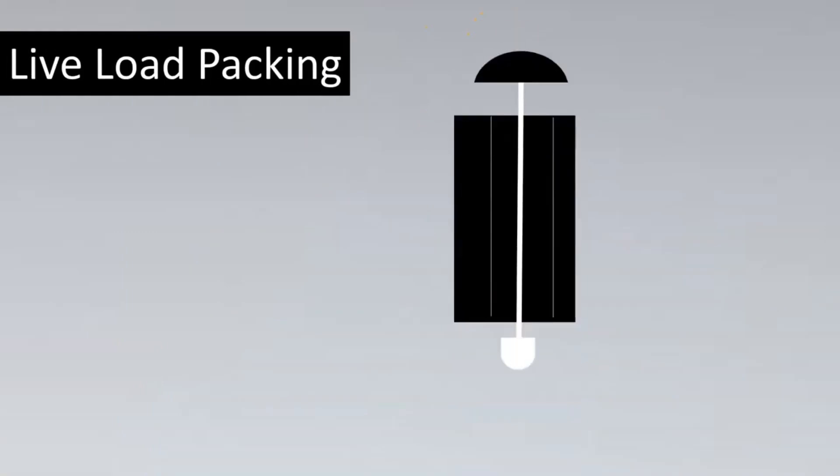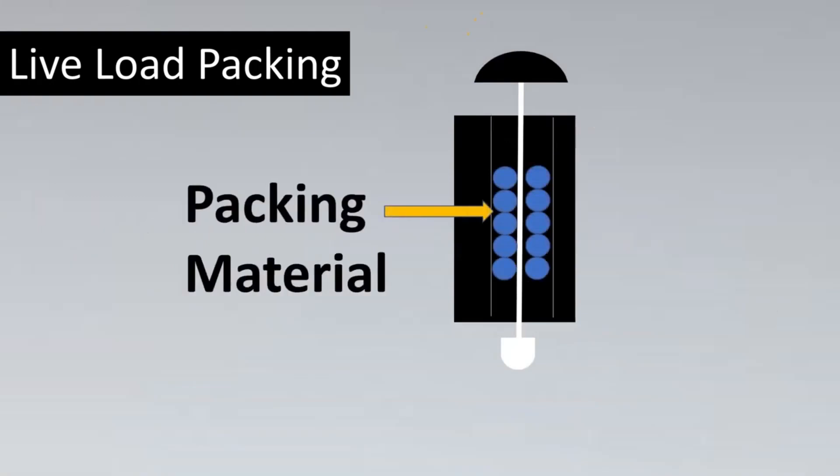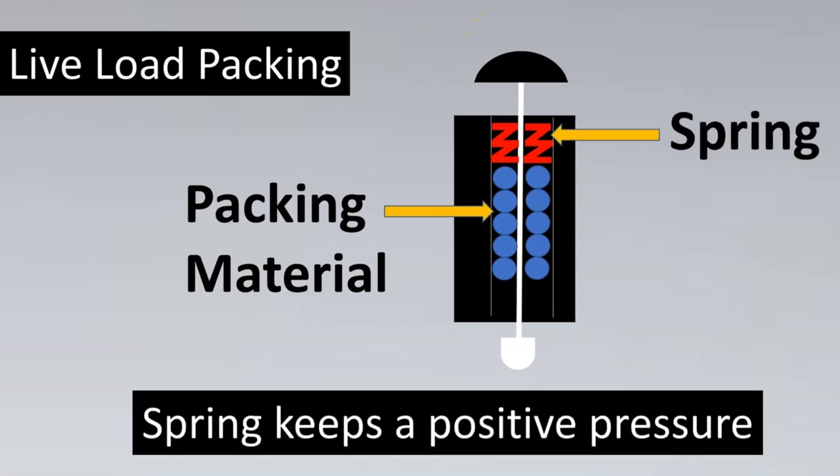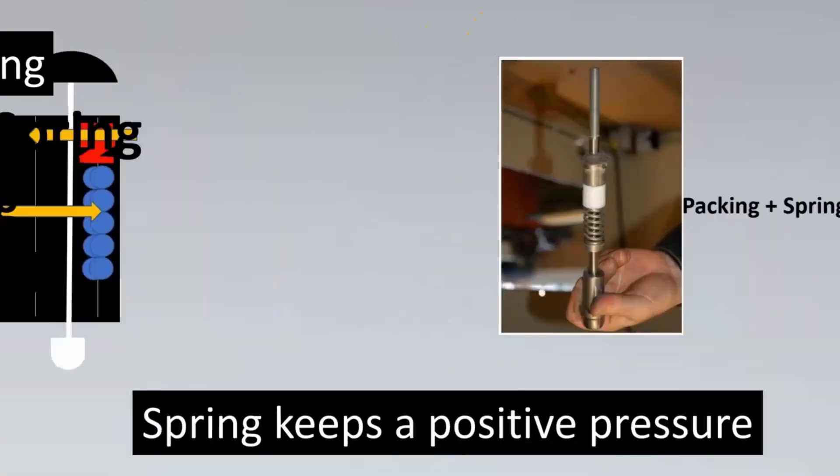But how do you ensure that you are able to meet such criteria? Engineers have come up with some very interesting concepts in order to meet such stringent criteria. Let's look at the first one which is called live load packing. Now this concept we'll try to understand with a hypothetical valve example. So here's my packing material which is put in the valve. Now the valve in normal operation will keep on operating, throttling the valve and the flow through it. But if you notice eventually the packing is going to get worn out and maybe it's not able to provide that much pressure.